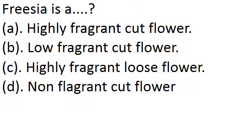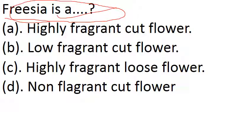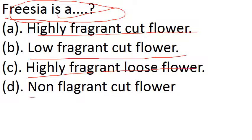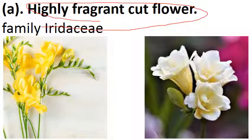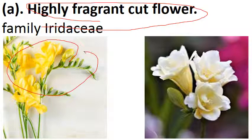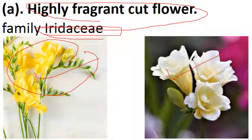Our last question: Freesia is a — options are highly fragrant cut flower, low fragrant cut flower, highly fragrant loose flower, or non-fragrant cut flower. We already discussed that Freesia comes under cut flower, so option C (loose flower) is eliminated. The answer is option A — highly fragrant cut flower. There is a yellow variety and a white variety. The family is Iridaceae, same as Gladiolus.